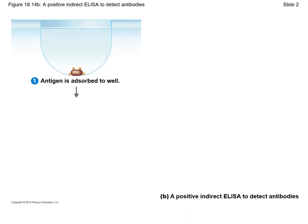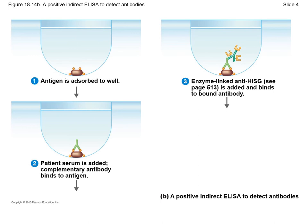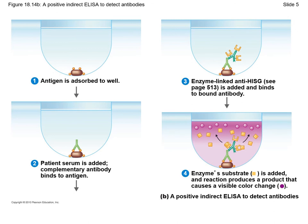To perform an indirect ELISA, you start with the antigen, which is absorbed to the bottom of the well. Then you add the patient's serum, which may or may not have antibodies that recognize that antigen. After allowing time for the antibodies to bind to the antigen, you add the enzyme-linked antibody that recognizes the target antibody. The last reagent you add is the substrate; if the enzyme is present, it will convert the substrate into the product and cause a color change in the well.